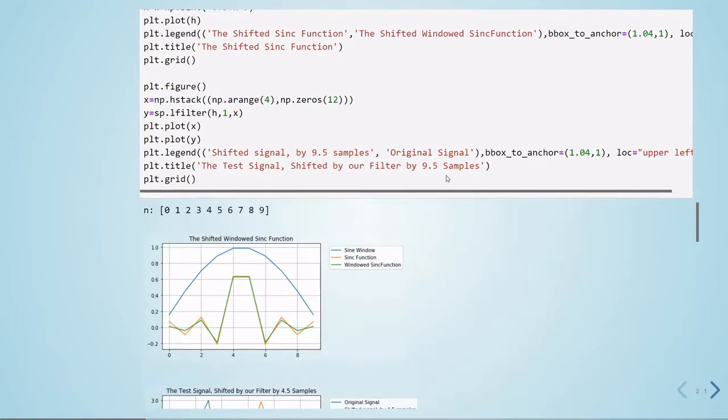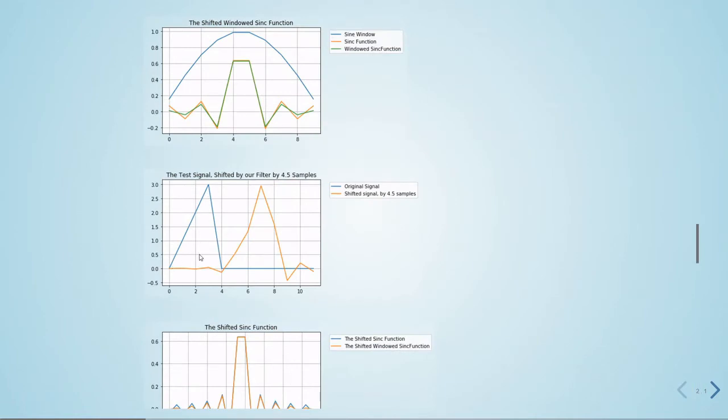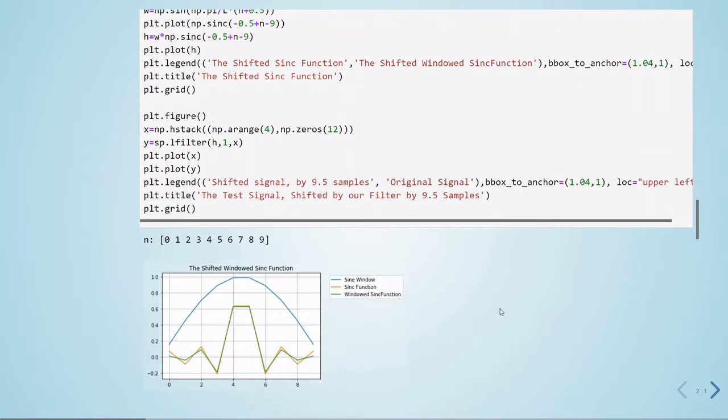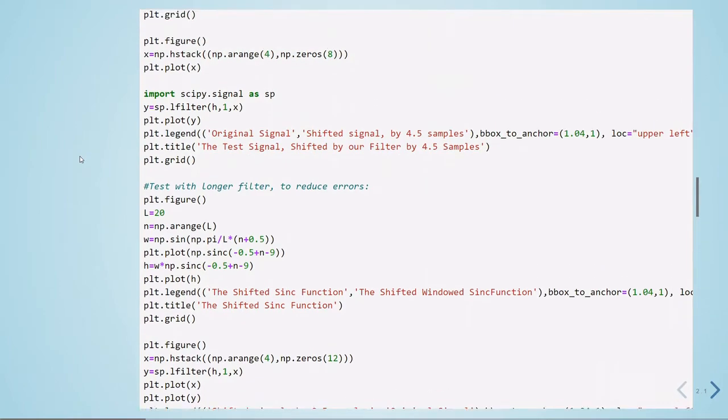And then we will plot here. So this is the original signal in blue. And this is the output of our filter. And we can see some errors. We can see that there is a delay. But we also see that our filter is very short.